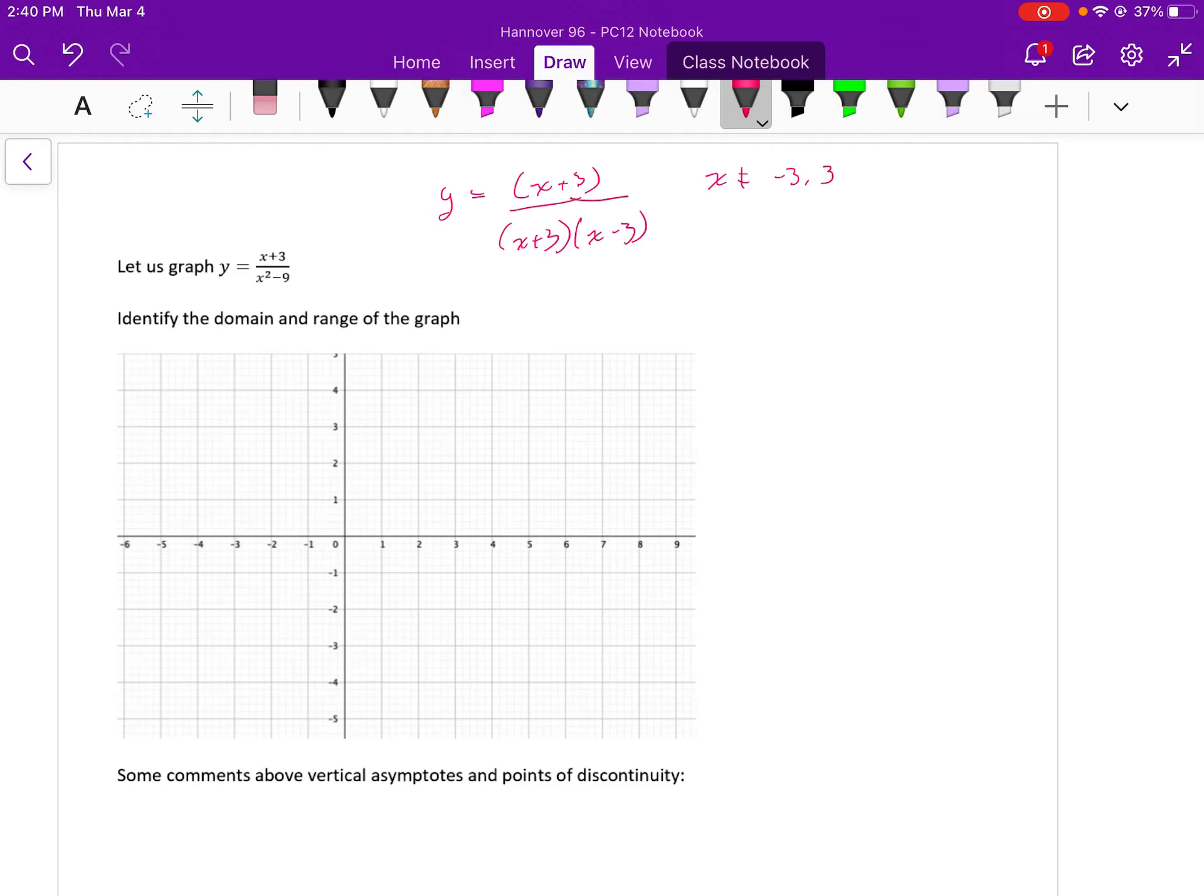And that's going to be fairly important. However, I do notice that we share a common factor of x plus 3 both in the numerator and the denominator. So now I see y is equal to 1 over x minus 3, where x cannot be equal to negative 3 or positive 3.